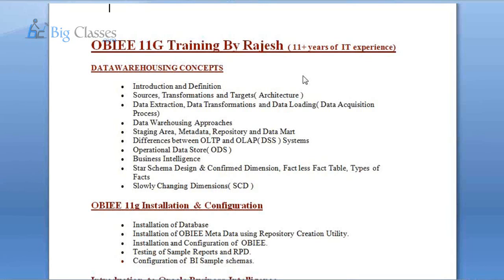When we talk about the data warehousing approaches, we talk about top-down and bottom-up approaches. We talk about Kimball and Inmon approaches and how they differ from each other. Then we talk about the staging area and metadata in different areas — metadata with respect to the source, with respect to the staging, and with respect to the enterprise data warehouse. We talk about metadata in different layers, then the repository, which is the semantic layer, or the data marts.